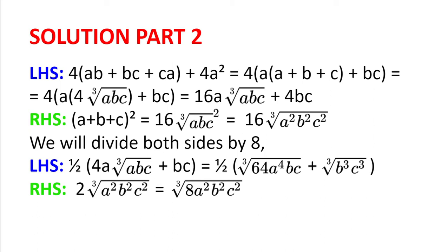We can now divide both sides by 8. On the left-hand side we get one half multiplied by the cubic root of 64A to the power of 4 times BC, putting the 4A inside the root, plus the cubic root of B cubed multiplied by C cubed.